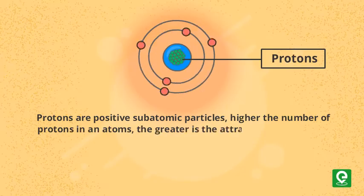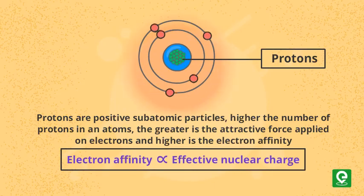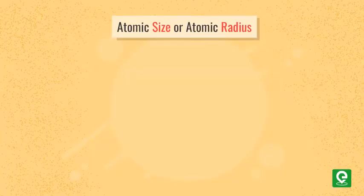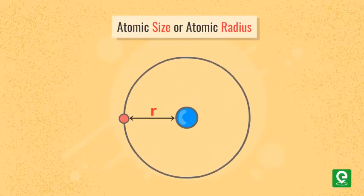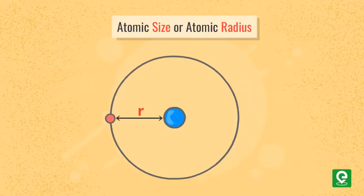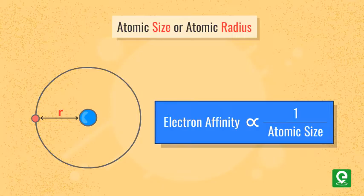Atomic size or atomic radius: when the size or radius of an atom increases, the electron entering the outermost orbit is more weakly attracted by the nucleus and the value of electron affinity is lower. That means the electron affinity is higher for smaller atoms.